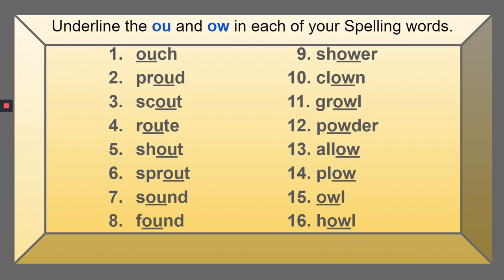I want you to take your pencil and underline the OU in each of the first 8 spelling words, numbers 1 through 8, just like I did. Then on numbers 9 through 16, underline the OW in each of those spelling words. I'm hoping you're paying attention to patterns that will help you remember how to spell these words and other words with these sounds. I'm going to give you a minute to do that.